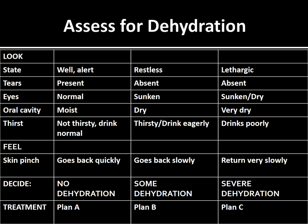In diarrhea, the killer is basically dehydration. Assessment of dehydration is of prime importance and helps plan management. We divide it into three categories per WHO: no dehydration, some dehydration, and severe dehydration. For severe dehydration — Plan C; for some dehydration — Plan B; for no dehydration — Plan A. In a child with no dehydration: state is well and alert, tears are present, eyes normal, oral cavity moist, drinks normally, and skin pinch goes back quickly.